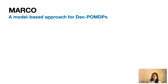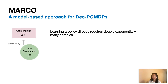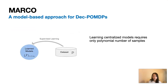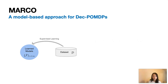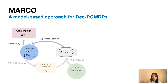To address the problem of sample inefficiency, we propose Marco, a model-based approach for DECPOMDPs. The key insight is that learning policies directly from the environment requires doubly exponential samples. But by leveraging CTDE, we can learn centralized models of the environment within just a polynomial number of samples in terms of the number of states and joint actions. Marco alternates between model learning, policy optimization, and learning an exploration policy for data collection.